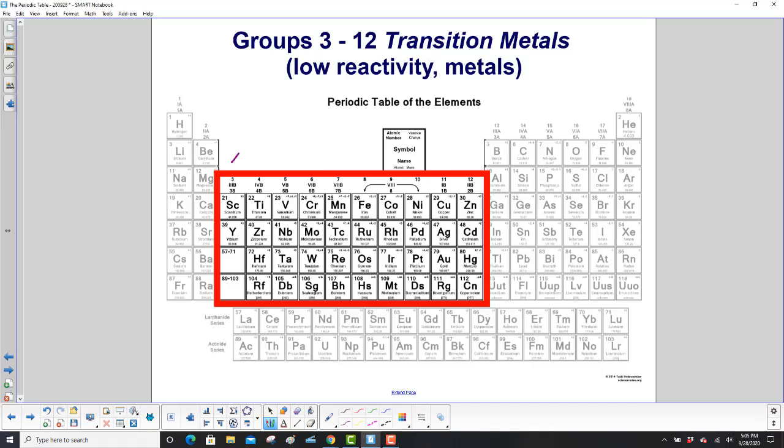Groups 3 through 12, outlined in red, are the transition metals. They have a low reactivity, and as per the title, they are metals.